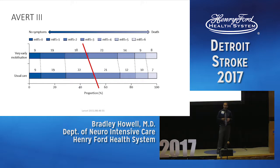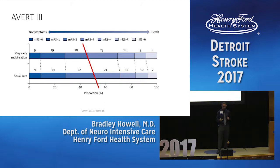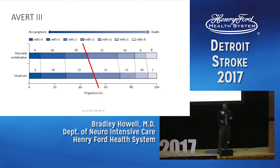They also implemented a protocol-based dose of rehab for all patients, daily assessed based on that patient's functional ability that day. Comparing the modified Rankin distributions, the very early mobilization group on top — the darker blue representing better outcomes — the line did not favor the intervention. Slightly more in the usual care group had better outcomes than in the very early mobilization group.